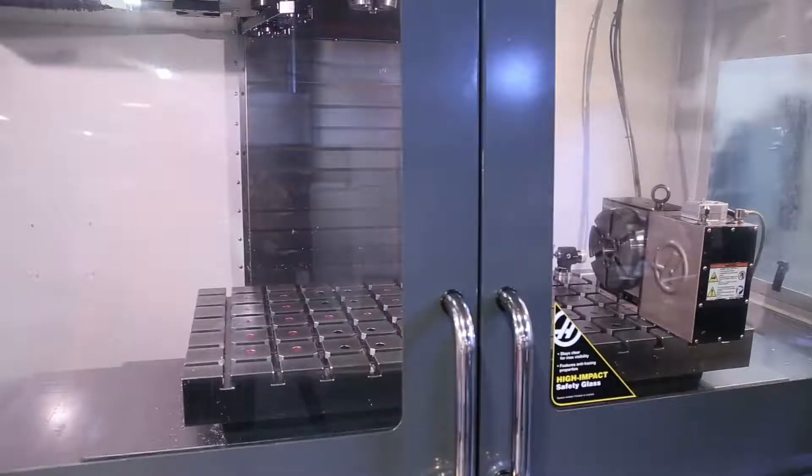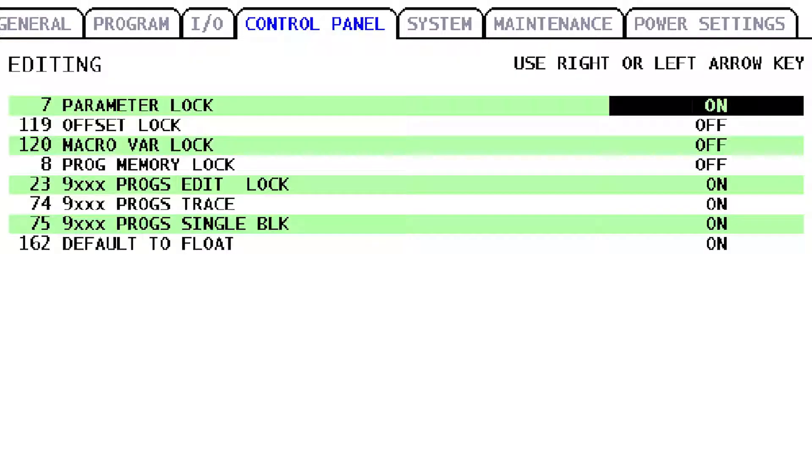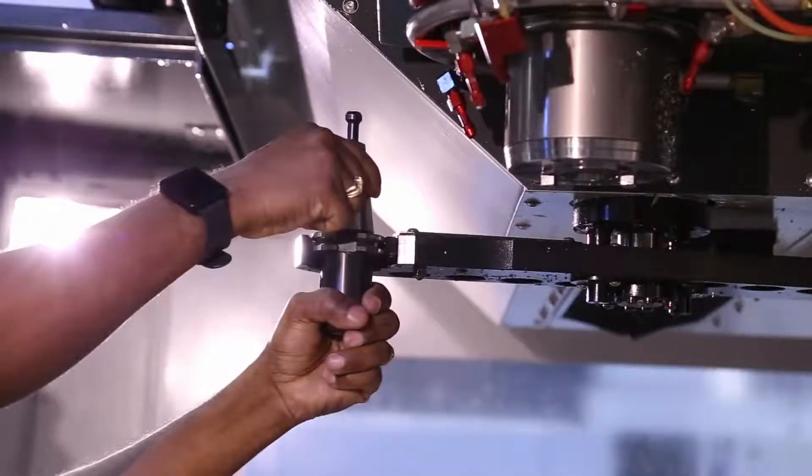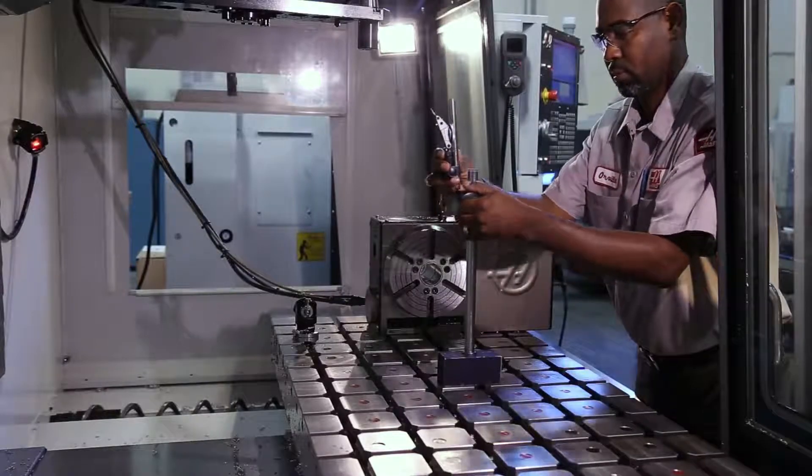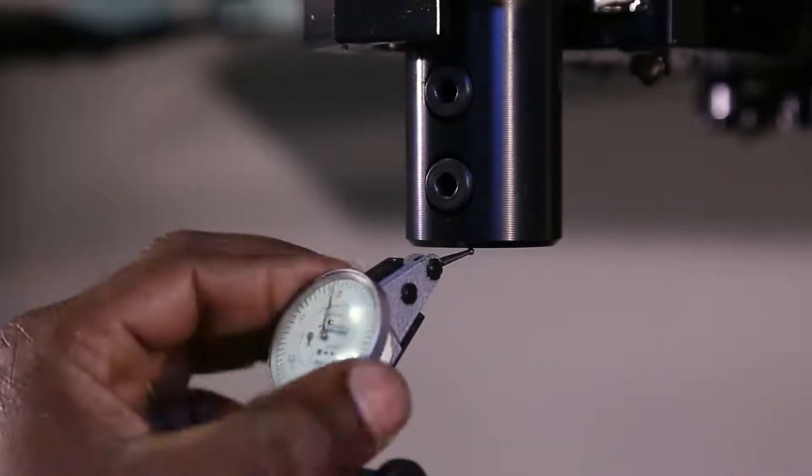Zero return all axis, then jog the X and Y axis to the center of travel. Change setting 7 to off and press enter. Put a blank tool holder in the double arm. Set up a 5 tenths indicator and mag base on the table with the tip of the indicator touching the bottom of the tool holder and set the dial to zero.